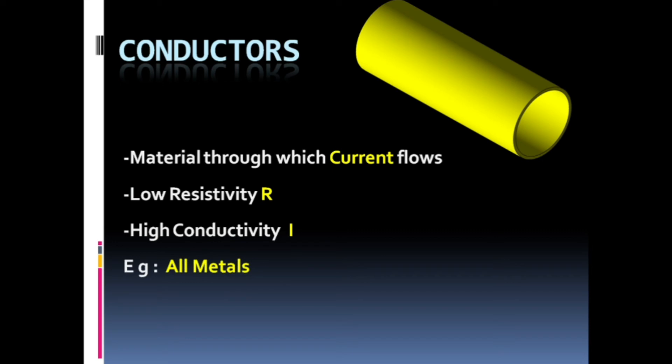Examples of conductors are all metals. Metals such as silver, gold, and iron are basically conductors.